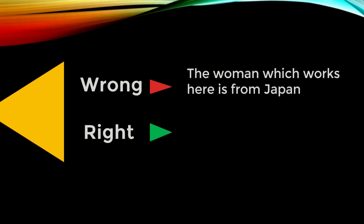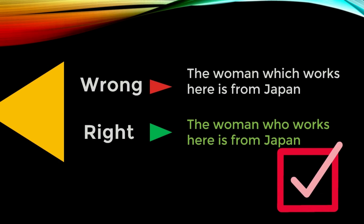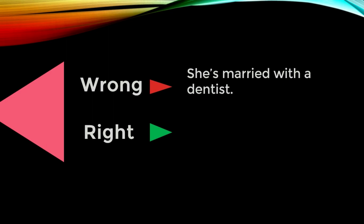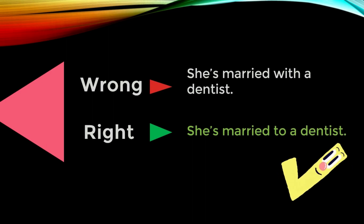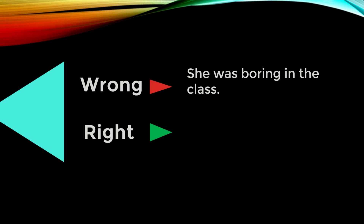When we're talking about a person, you use 'who.' Next: 'She's married with a dentist.' Any idea where the error is? The error is the word 'with' — it's the wrong preposition. The correct preposition should be 'to': 'She's married to a dentist.' We actually say engaged to, married to. So the problem was with the preposition.